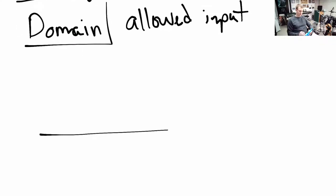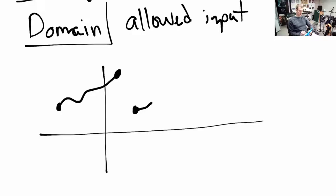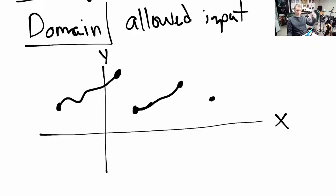So let me just give you some random graph of a function. I'm going to have a curvy graph starting and ending, jumping down a bit with a filled-in circle, then rising back up, and then a single point sitting alone by itself. We've got an x-axis and a y-axis. The x-axis represents our inputs, and the y-axis tells us the heights or the values associated with that x input below it.